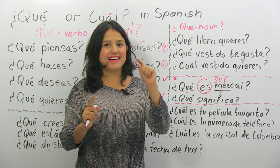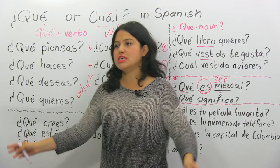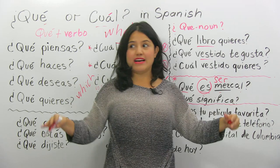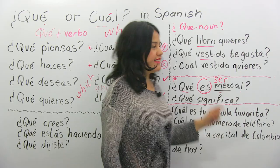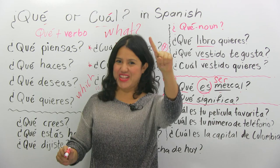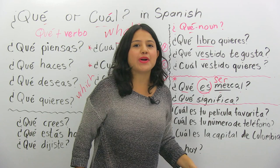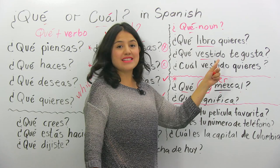Let's make it more specific. ¿Qué? Y noun — sustantivo: libro, vestido, pelota, mesa, silla. We are surrounded by nouns. Qué with an accent mark — muy importante — qué y el sustantivo. ¿Qué libro quieres? — what book do you want? ¿Qué vestido te gusta? — what dress do you like?